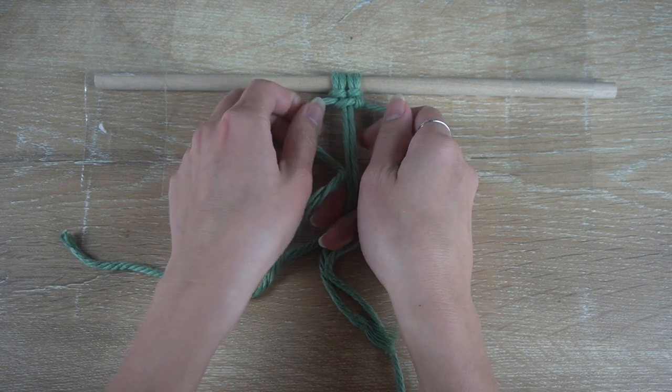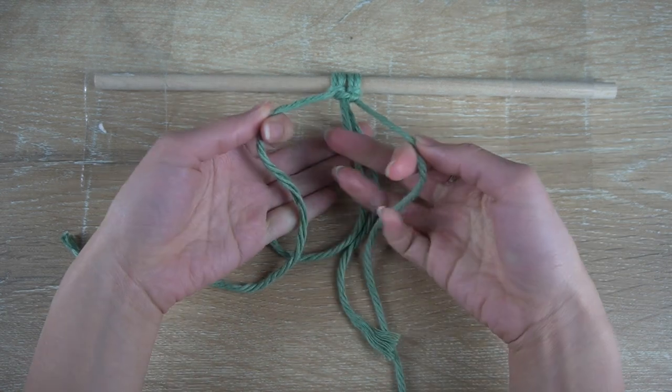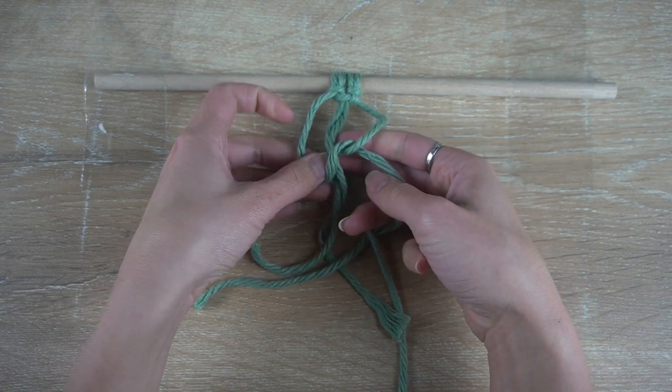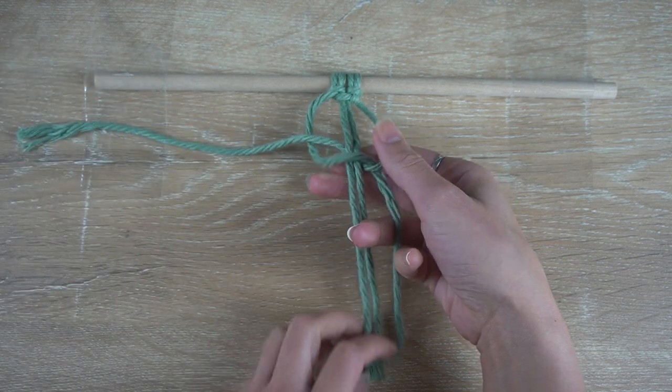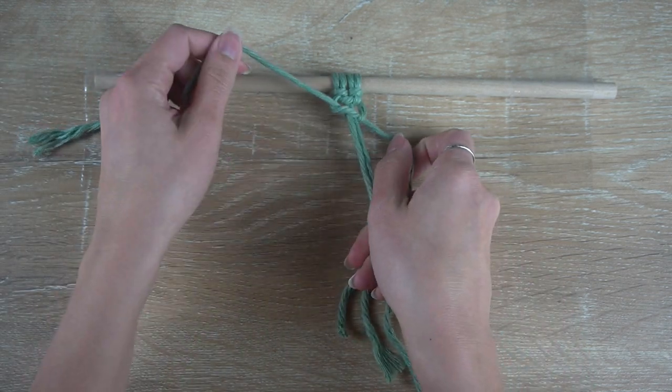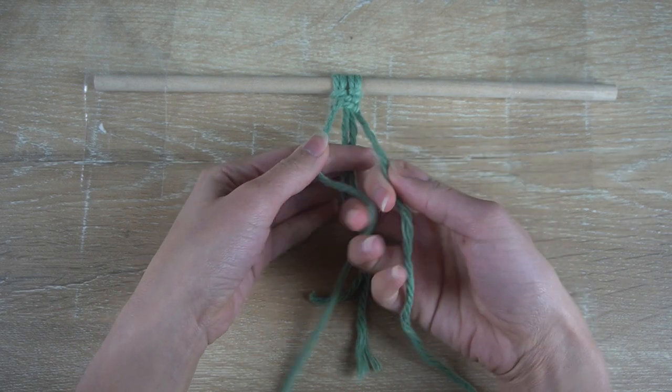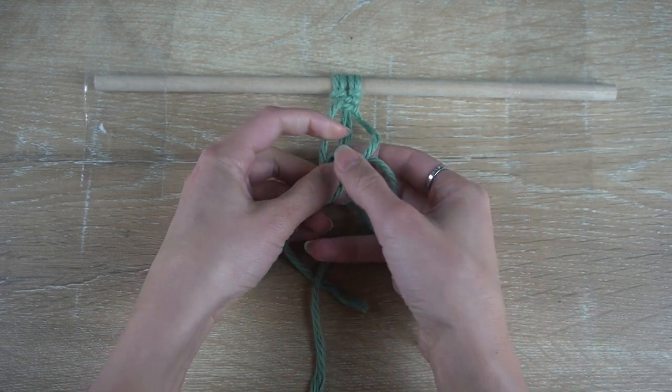Continue with the same half knots, starting with the same cord, for a series of more half knots. Then, as you make these half knots, this chain will start to spiral.